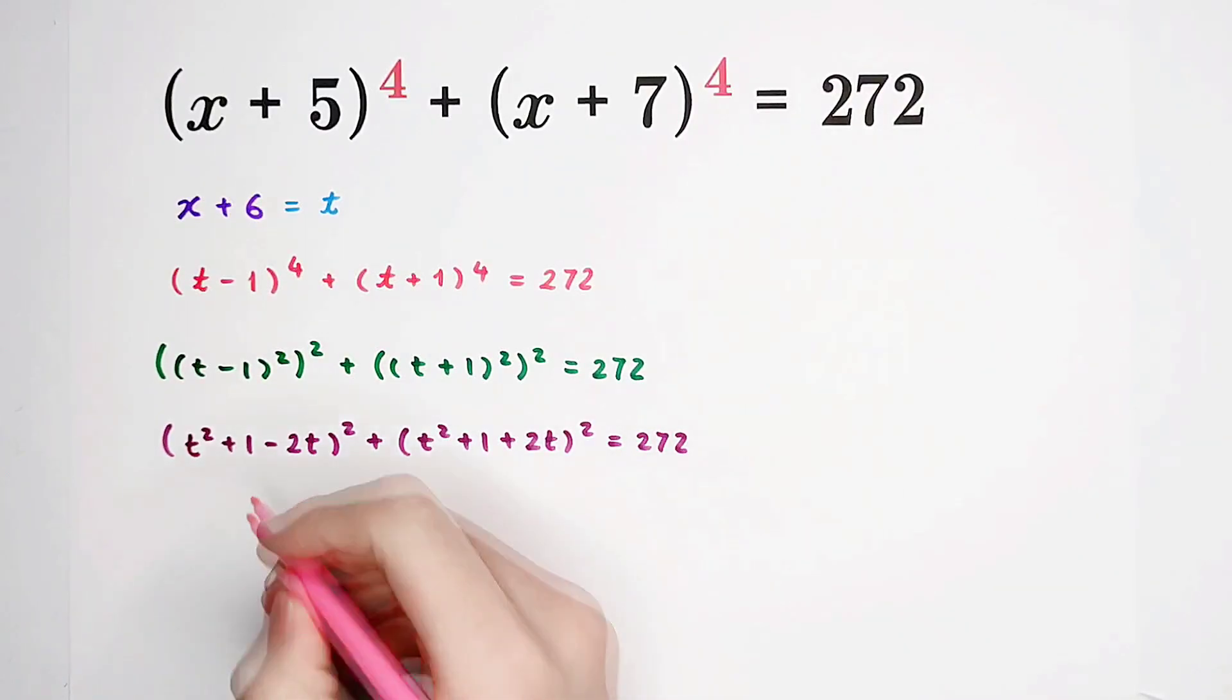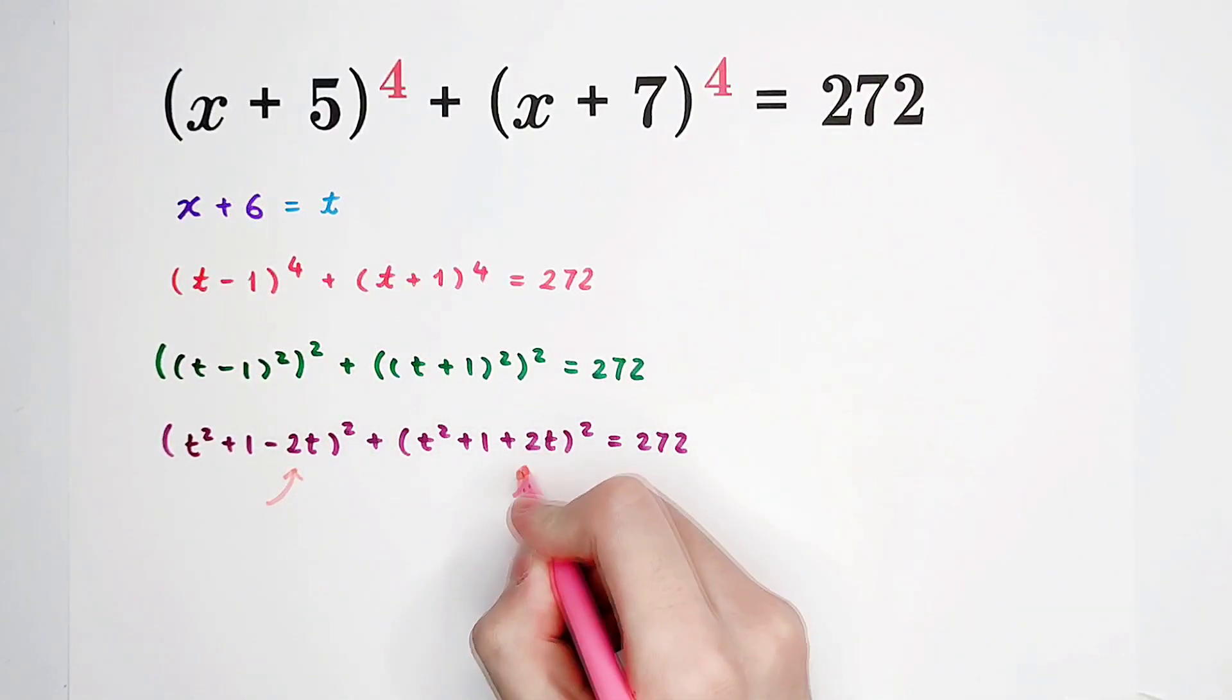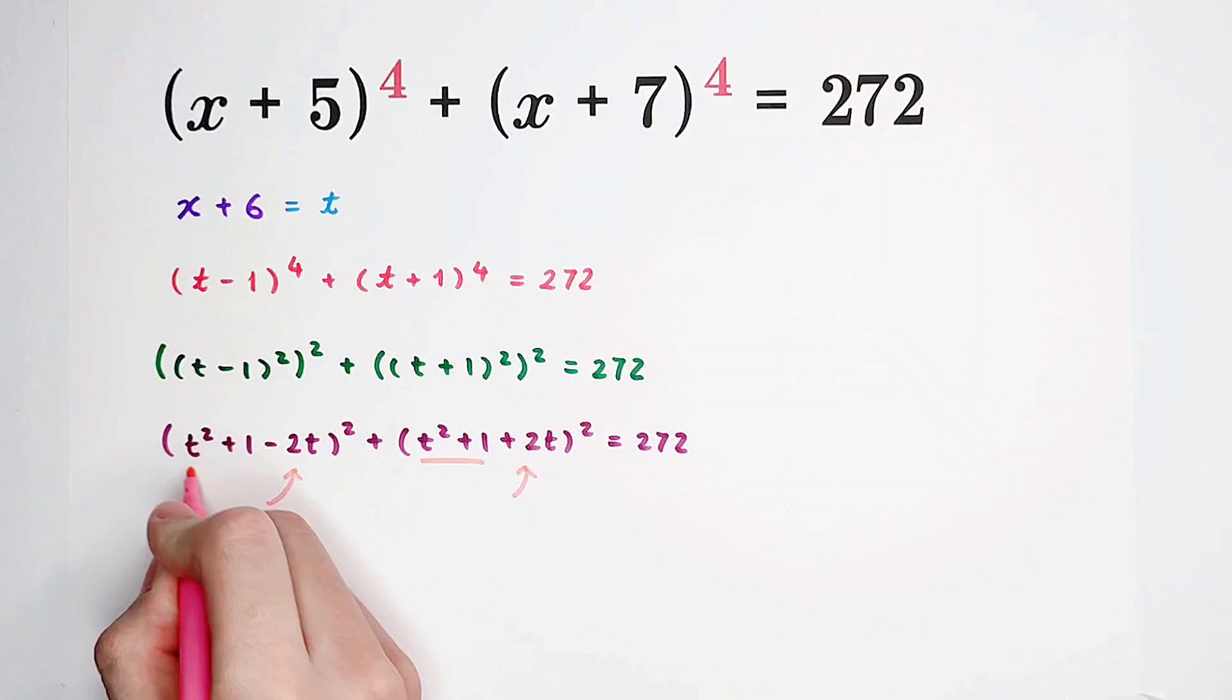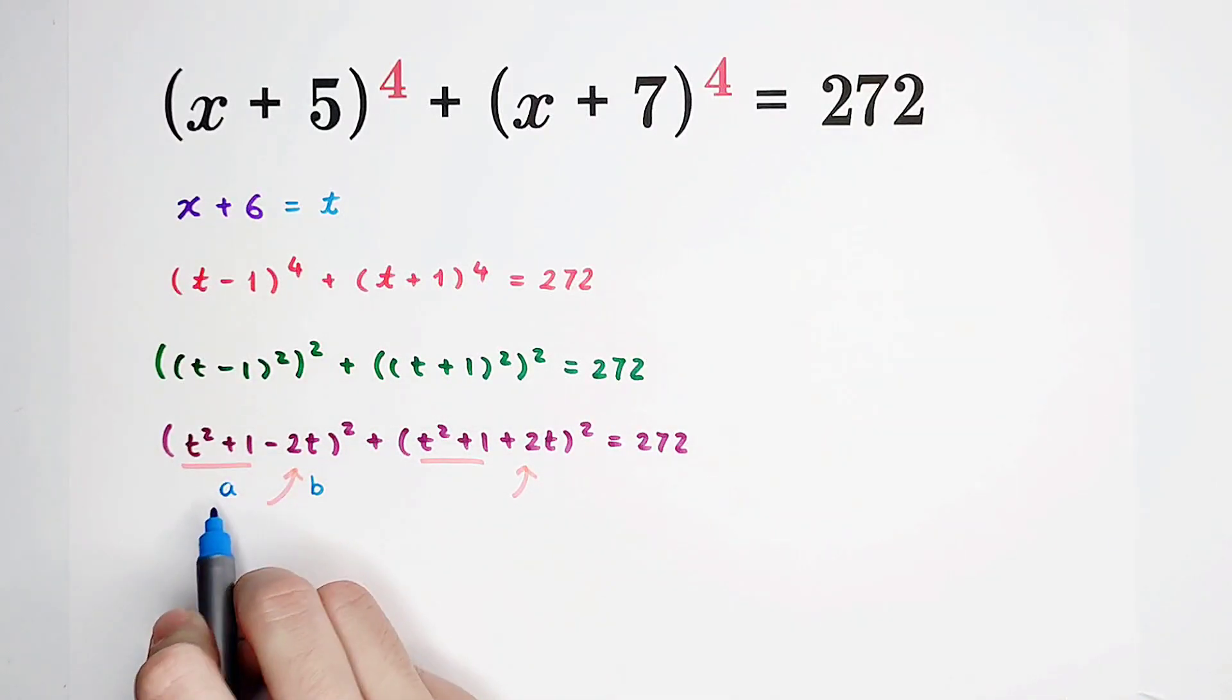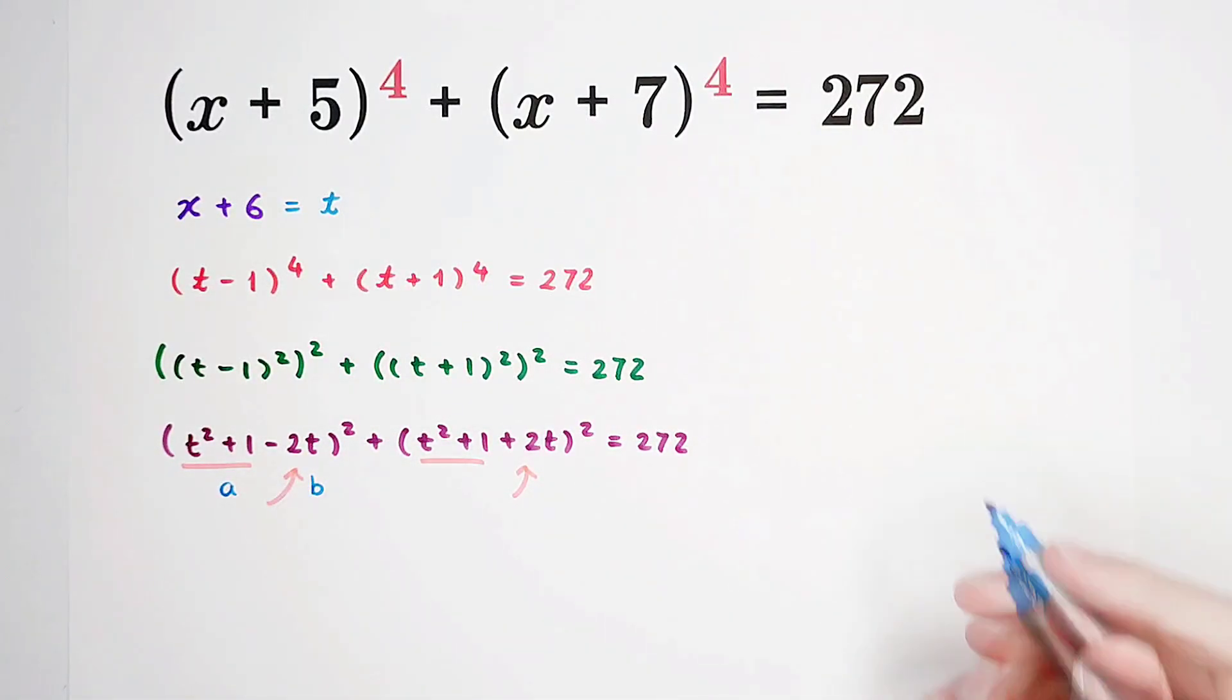Now you can see. Here minus 2t, here plus 2t, t squared plus 1, t squared plus 1. So we can substitute again. If we let this be a, this be b. That means t squared plus 1 is a, 2t is b. So now,